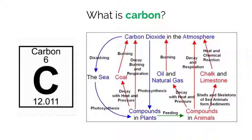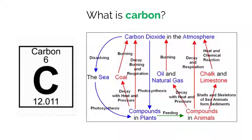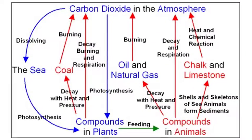Subtopic 4.3 focuses on the cycling process of carbon in ecosystems. Earlier, in 4.1 and 4.2, we discussed how matter cycles in ecosystems. Interestingly, carbon is one form of matter that fits that description. Carbon is found in many forms throughout an ecosystem and is constantly changing forms due to it being recycled between living and nonliving things. Here are a few common forms of carbon we frequently find.